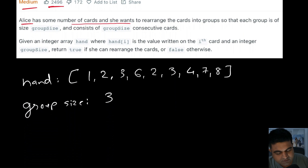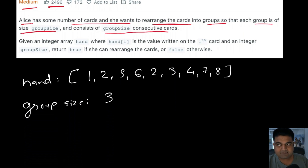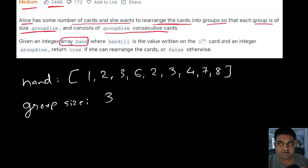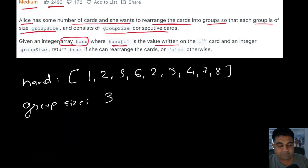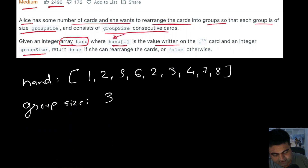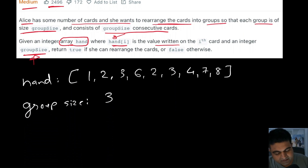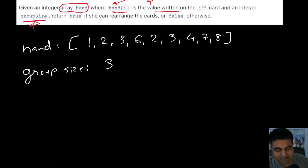We have a girl named Alice who has some number of cards and she wants to rearrange these cards into groups such that each group of size groupSize consists of consecutive cards. We are given an integer array called hand that defines bunch of different values inside a deck of cards, and we are also given another variable called groupSize. We need to check whether we can divide all of these hands into groups of groupSize such that all of the rearranged groups contain consecutive cards.